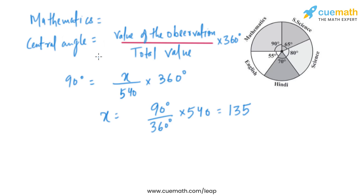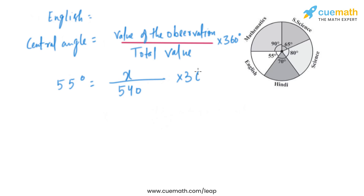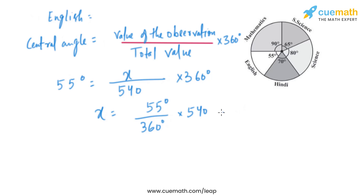Using the same approach, let's find the marks obtained in English. The central angle for English is 55 degrees. So, x divided by 540, multiplied by 360 equals 55 degrees. Solving, we get x equals 55 divided by 360, multiplied by 540, which gives us 82.5 marks in English.